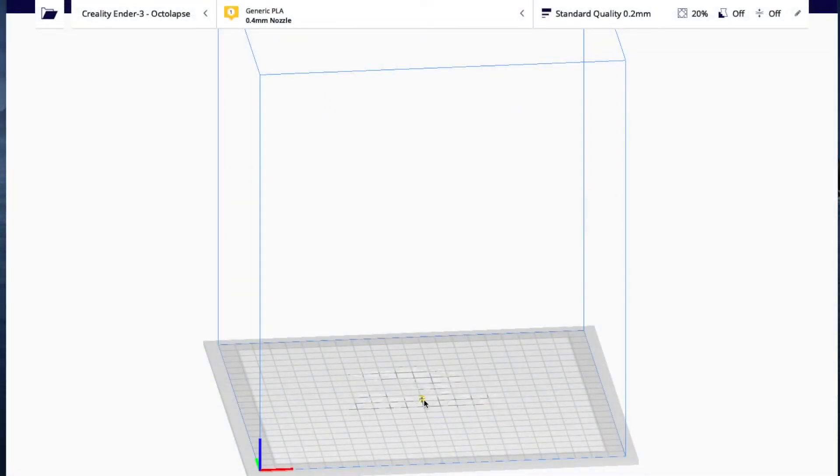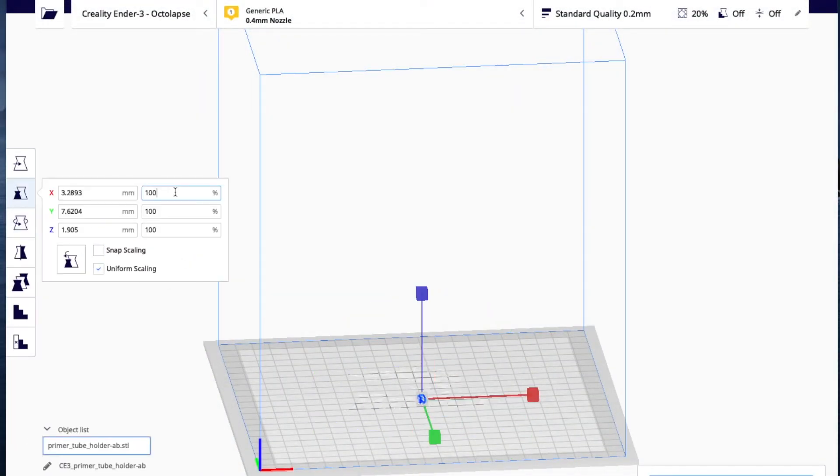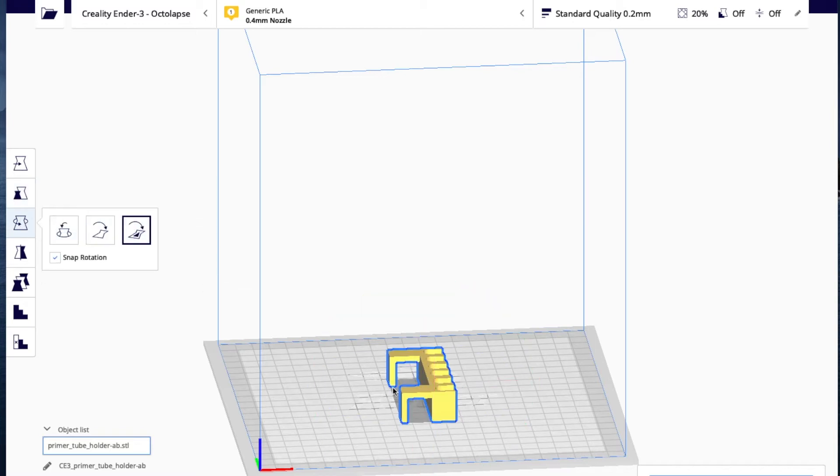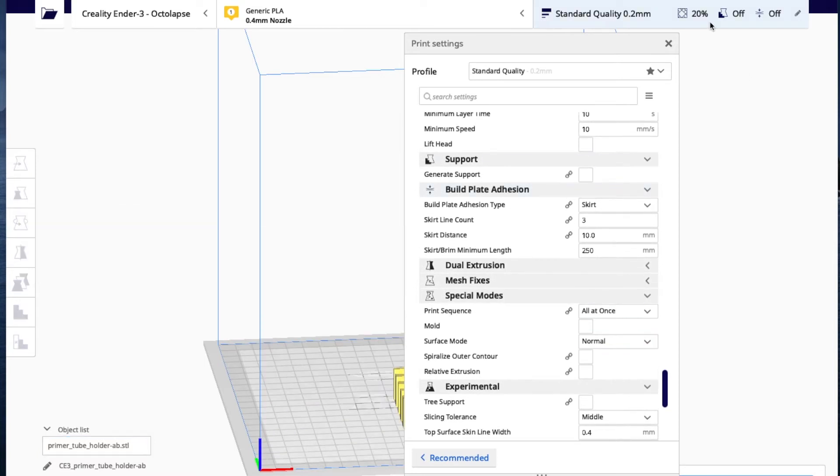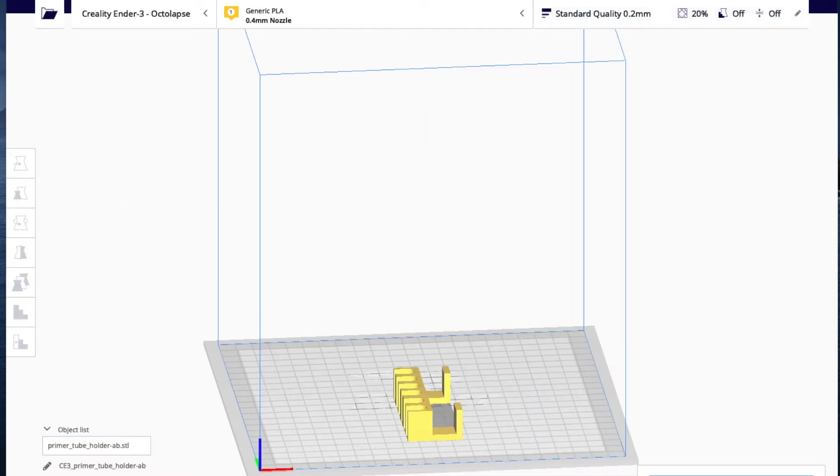I imported the model into Cura and the directions say that you need to scale the model up 1000%. I'm going to print this with a resolution of 0.2mm and no supports and a 20% infill. It's going to take just over 2 hours to print.